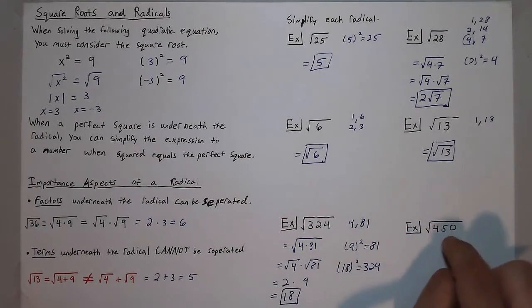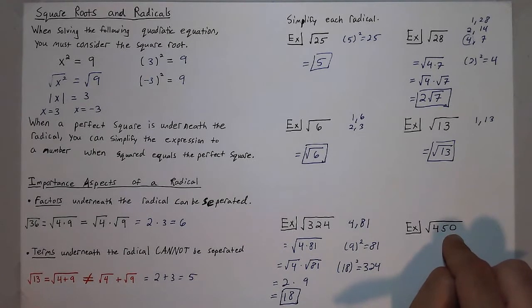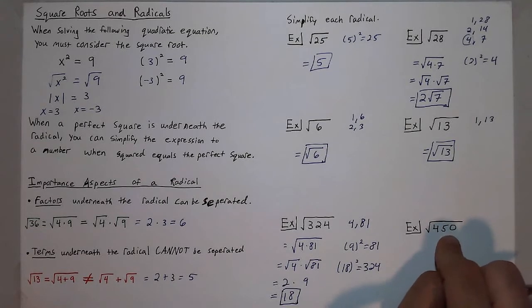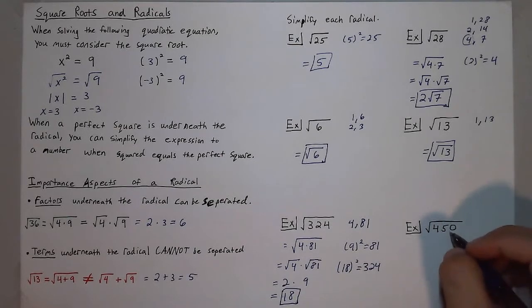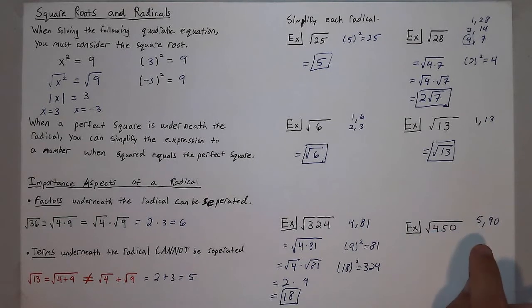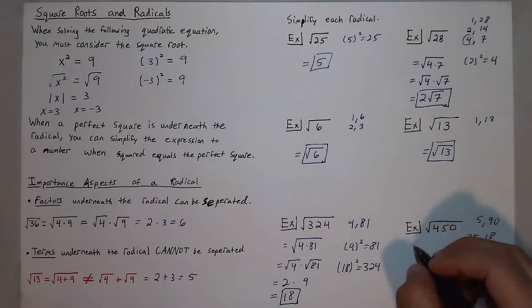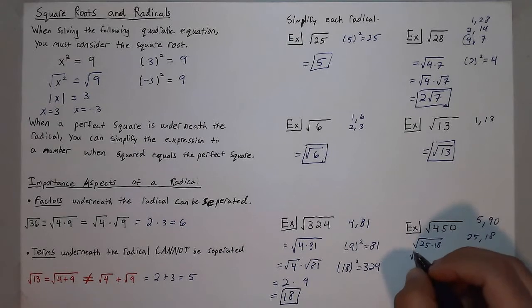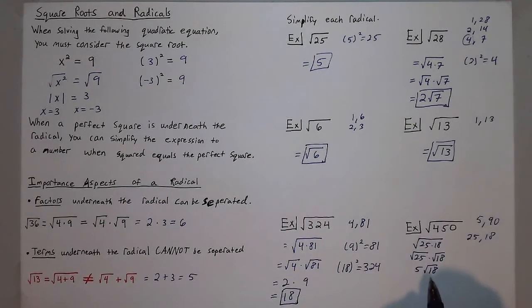Last, we have the square root of 450. Checking divisibility by 4: 450 divided by 4 is 112.5, so it's not a factor. I know it's divisible by 5 — 450 divided by 5 is 90, and 90 is also divisible by 5, so maybe it's divisible by 25. Indeed, 450 divided by 25 is 18, so I have 25 times 18 with 25 as the perfect square. Separating: square root of 25 times square root of 18 gives 5 times square root of 18.